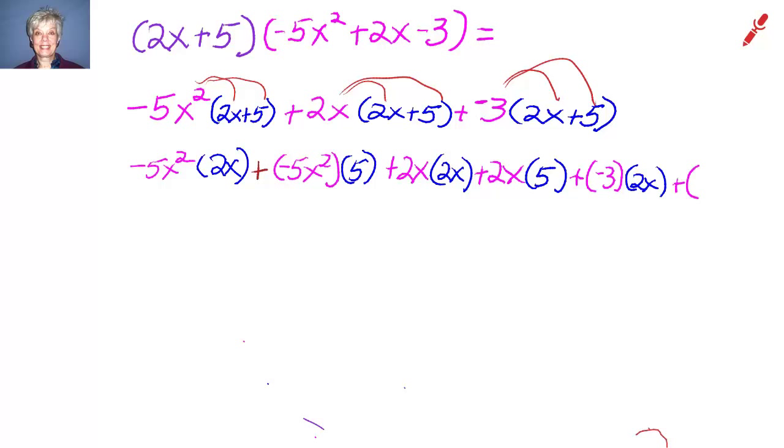So that gives us -5x² times 2x plus -5x² times 5, plus 2x times 2x plus 2x times 5, plus -3 times 2x plus -3 times 5.